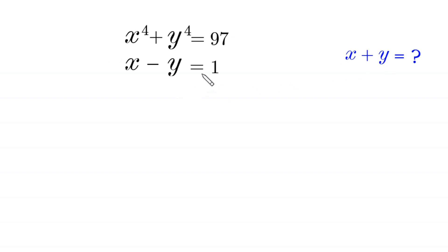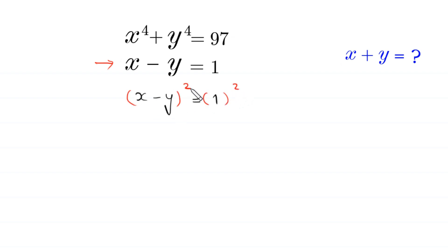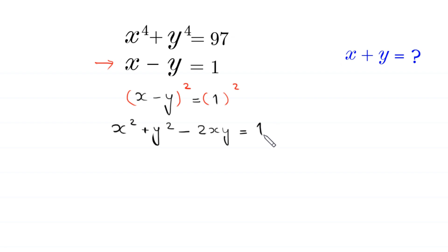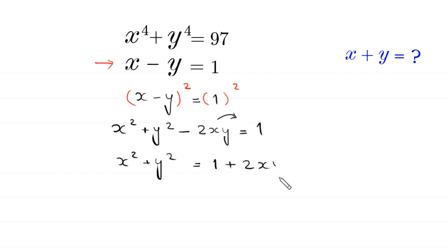Let's start by squaring both sides of this equation. We have x minus y is equal to 1, and we take the square of both sides. This x minus y whole squared will become x squared plus y squared minus 2xy is equal to 1. We move negative 2xy to the right hand side, so this becomes x squared plus y squared is equal to 1 plus 2xy.